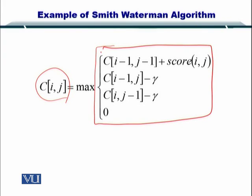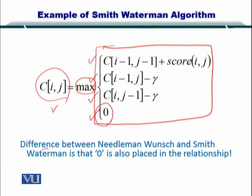If you remember, in the Needleman-Wunsch algorithm you only had the first three, but in the Smith-Waterman algorithm you introduce a zero as well. And you have to compute the maximum of these four towards computing C_ij.